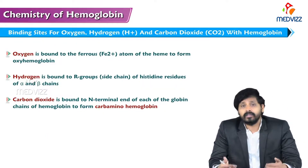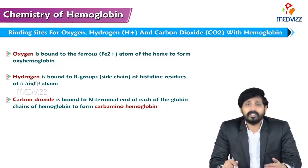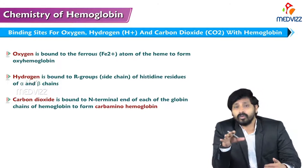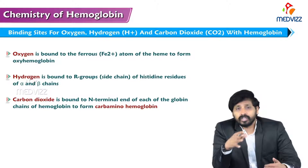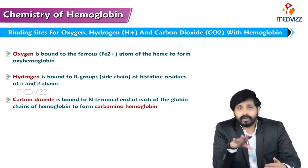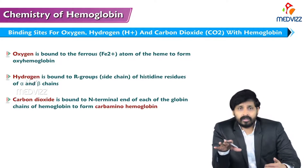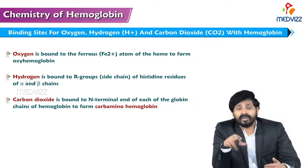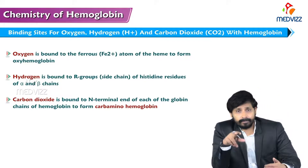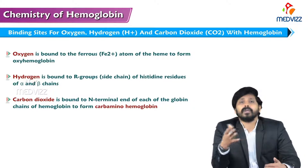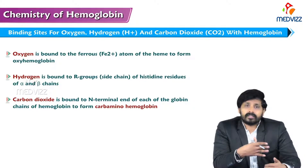Oxygen is bound to the ferrous form of iron of the heme to form oxyhemoglobin. Hydrogen is bound to R groups, meaning the functional groups of the side chain of globin, especially the histidine residues of the alpha and beta chains. This sort of binding is mainly useful in the buffering mechanism.